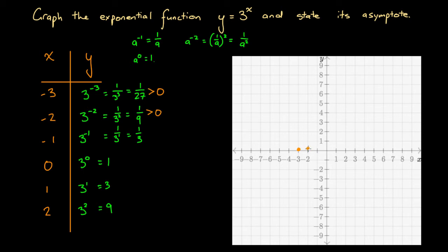We can draw this point here — still very close to 0, but a bit larger than the y coordinate before. At x equals minus 1, y equals one third, so that's 1 unit left of the origin, and we draw it about there. At x equals 0, y equals 1 — so 0 units left of the origin and 1 unit up. At x equals 1, y equals 3 — 1 unit right of the origin and 3 units up. At x equals 2, y equals 9 — that's 2 units right of the origin and 9 units up.